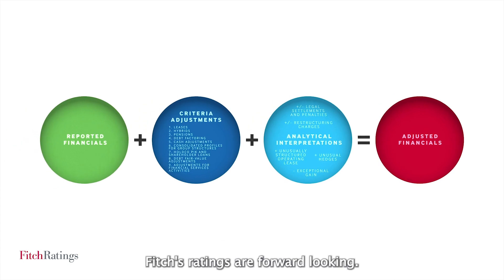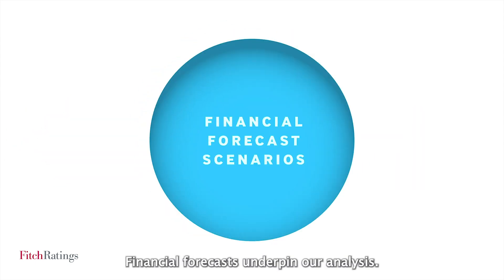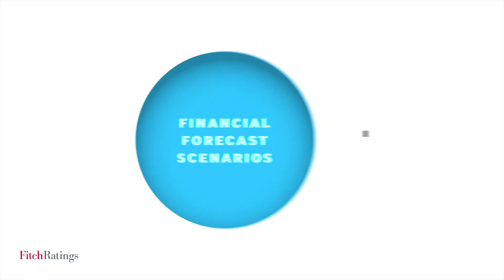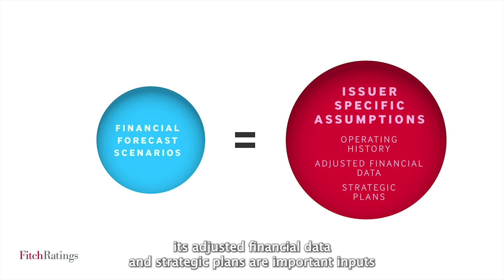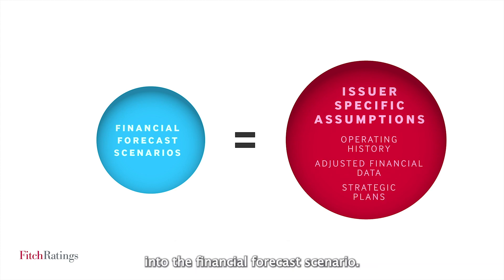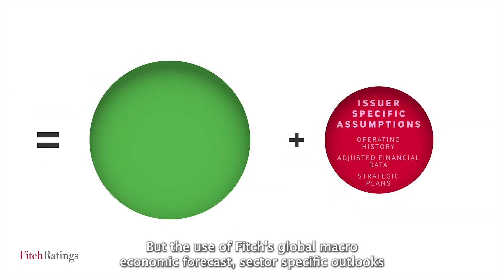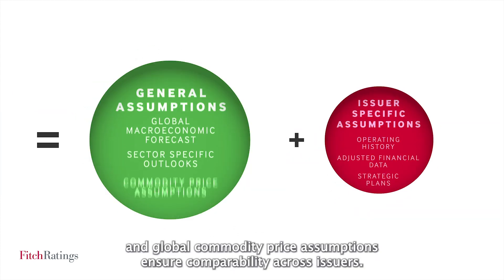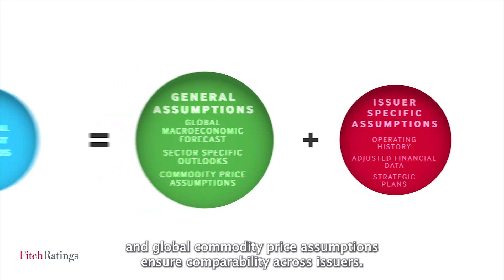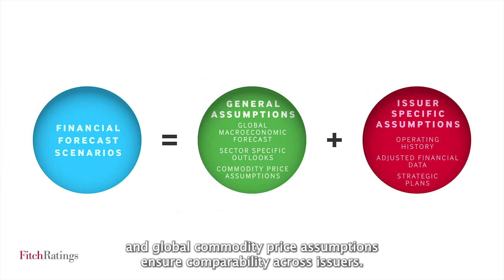Fitch's ratings are forward-looking, and financial forecasts underpin the analysis. An issuer's operating history, its adjusted financial data, and strategic plans are important inputs into the financial forecasts scenario. But the use of Fitch's global macroeconomic forecast, sector-specific outlooks, and global commodity price assumptions ensure comparability across issuers.